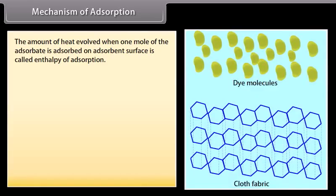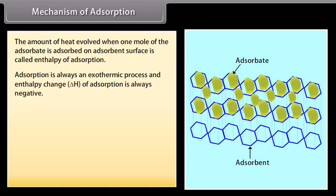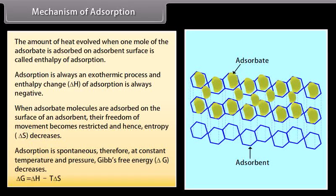The amount of heat evolved when one mole of the adsorbate is adsorbed on the adsorbent surface is called the enthalpy of adsorption. Adsorption is always an exothermic process and the enthalpy change is always negative. When adsorbate molecules are adsorbed, their freedom of movement becomes restricted and hence entropy decreases. Adsorption is spontaneous, so at constant temperature and pressure, Gibbs free energy decreases. This is expressed as: ΔG = ΔH − TΔS.